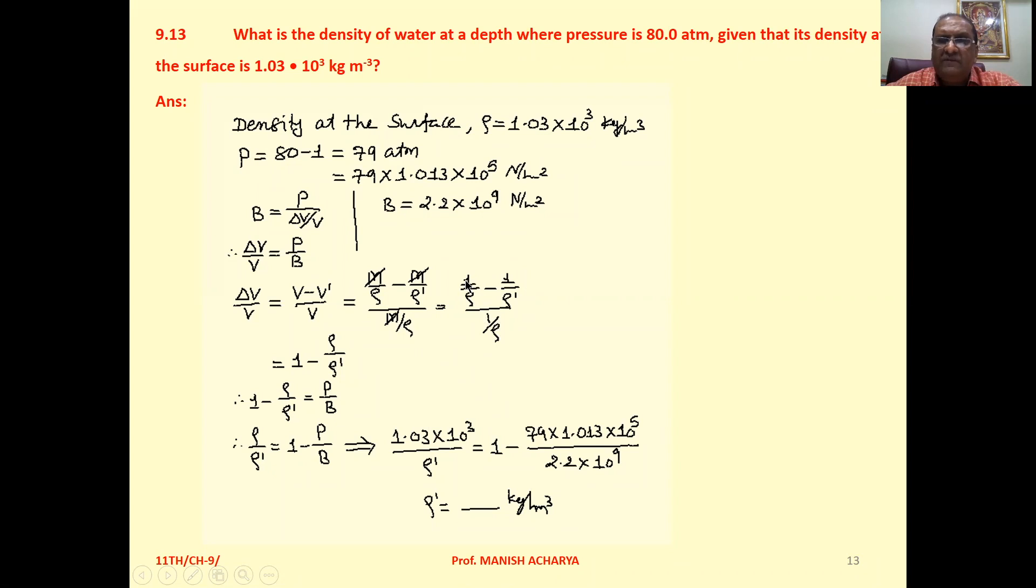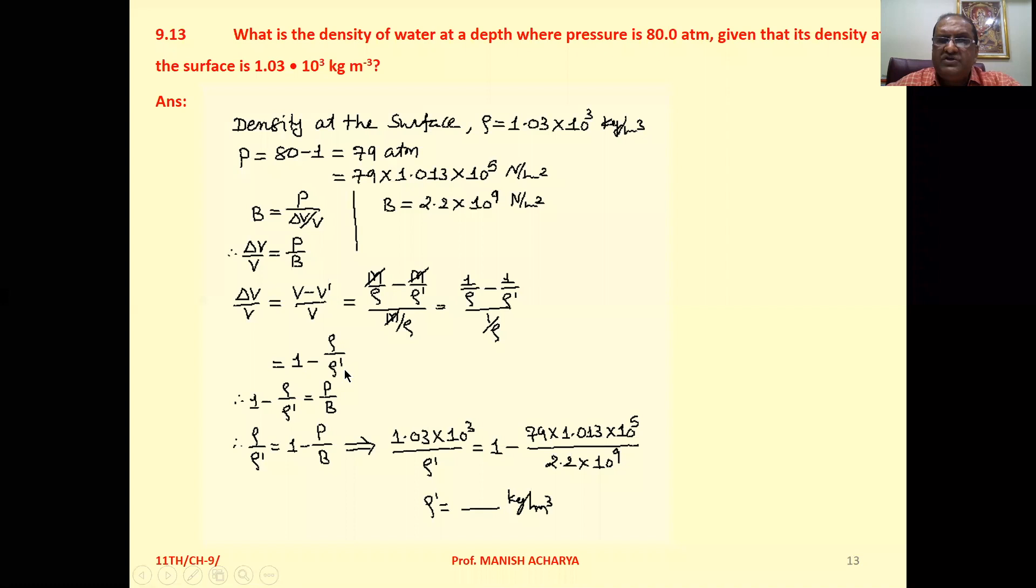Take rho in the numerator here, so rho by rho is 1 minus rho by rho dash. Now that is delta V by V, but delta V by V is P by B also.